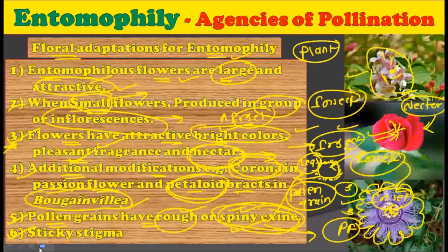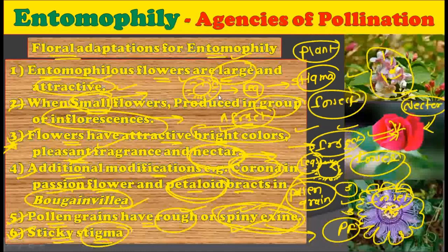The next floral adaptation is a sticky stigma. The stigma of the recipient flower is very sticky, so that when spiny or rugose pollen grains attached to the legs of an insect come in contact with the stigma, the sticky stigma catches these pollen grains. This is followed by pollen germination and subsequently pollination. The stigma is sticky in order to grab the rugose and spiny pollen grains.